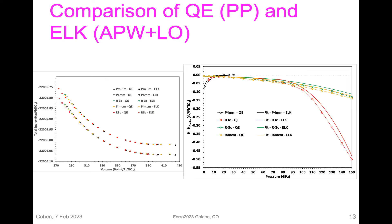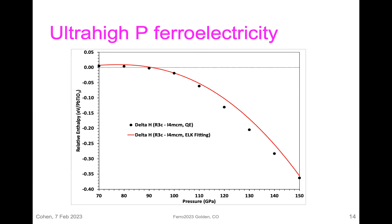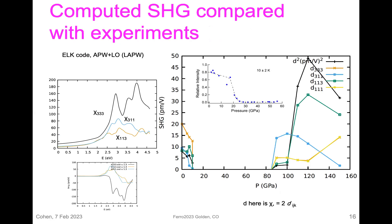Just to point out the comparison with ELK: we're comparing enthalpy curves with ELK and the pseudopotentials, and they really agree quite well. This is the high-pressure ferroelectric phase looking at the enthalpy — they're really quite close, with only small differences — basically perfect agreement. The advantage of the pseudopotentials is we can optimize the structures and have analytic stresses and forces that are quite accurate, which is not the case in LAPW.